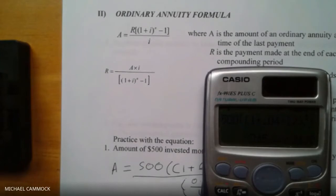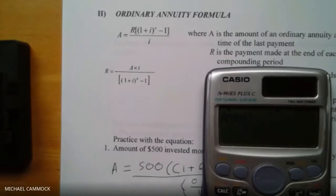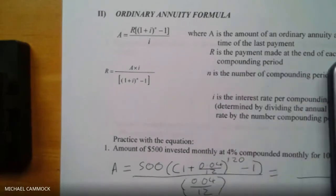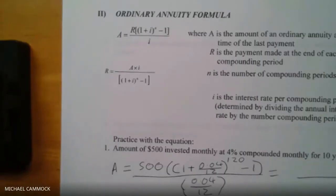Did everybody get 245.416...? Good. Don't delete it — hit the division sign, open another bracket, put 0.04 divided by 12, close that bracket, then press equals. You should now have your answer. I'm getting 73,624.90.